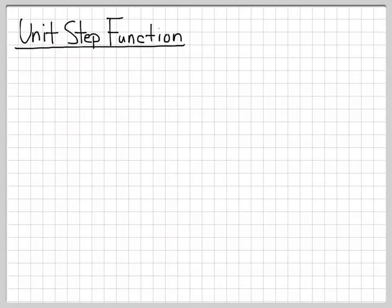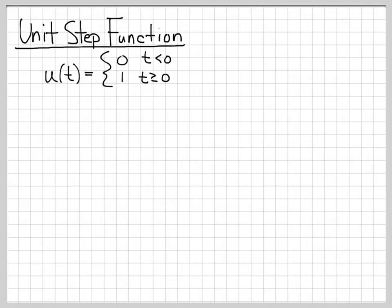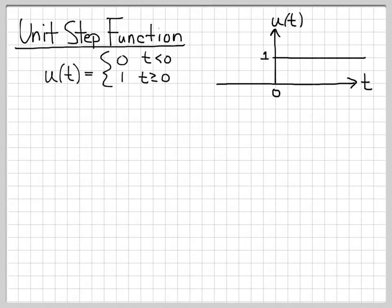Let's talk about the unit step function. The unit step function uses the notation u(t). u(t) is equal to 0 for all time less than 0, and it's equal to 1 for all time greater than or equal to 0. If we plotted that as a function of t, it's 0 everywhere, but at the time origin it turns on to 1, and then it's equal to 1 for all time greater than or equal to 0.